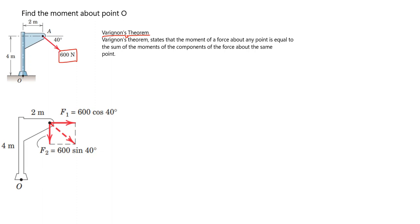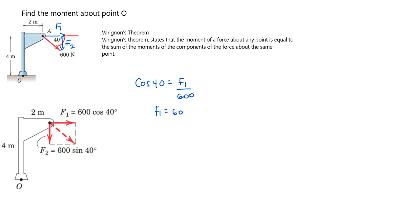We have the 600 newton force here. Since we are applying Varignon's theorem, we have to find the components of this force. Looking at this 40-degree angle, we are going to have the x-component and the y-component, just as shown in this free body diagram. Let's name the y-component F2 and the x-component F1. Taking cosine of 40 degrees gives us F1 over the hypotenuse, which is the 600 newton force.